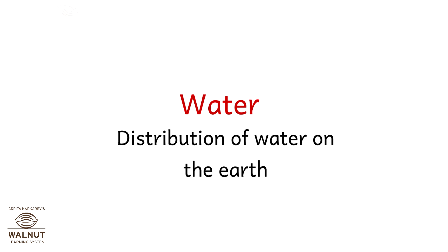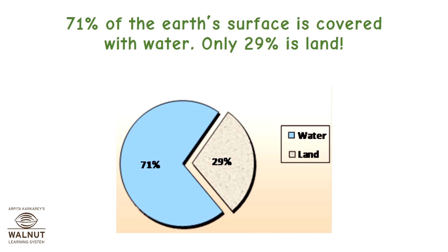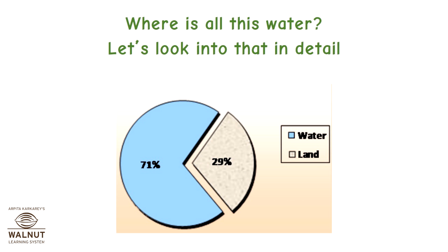Water — distribution of water on the earth. 71% of the earth's surface is covered with water. Only 29% is land. Where is all this water? Let's look into that in detail.